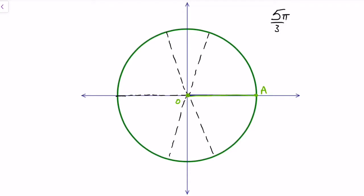So here's O, here's A, there's my initial arm, and I'm just going to count my way around. So there's pi over 3, 2 pi over 3, 3 pi over 3, which is the same as pi.